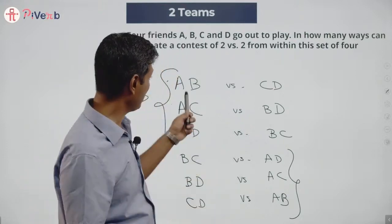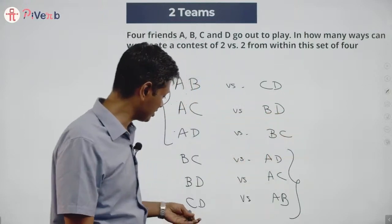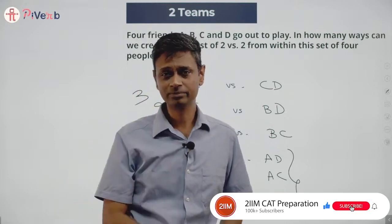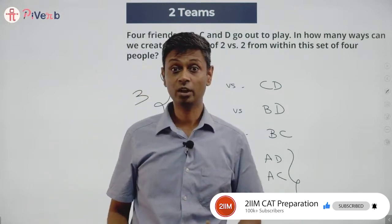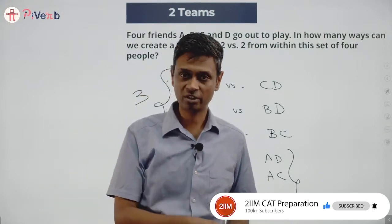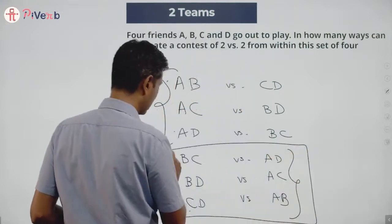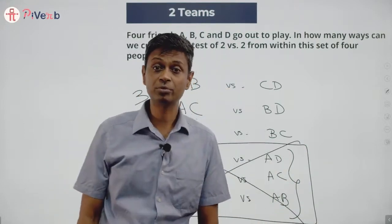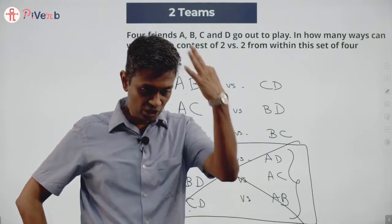If A-B is selected and C-D is remaining, having C-D selected and A-B remaining is the same — A-B are playing against C-D. Another way to think about it: you are A, and you want to play two versus two. You can be with B, with C, or with D — that's it. All combinations have been counted: three ways only. A-B vs C-D, A-C vs B-D, A-D vs B-C — only three ways.